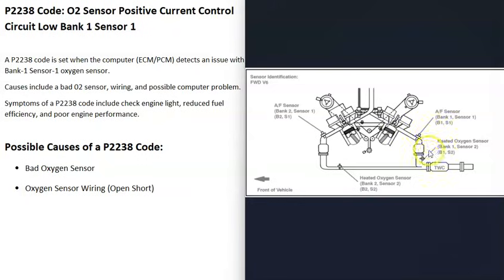Sensor two is located after the catalytic converter, sometimes right on it, and it's also called the downstream O2 sensor. But the main one the computer's seeing a problem with is bank one sensor one oxygen sensor.